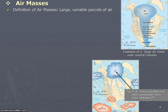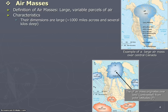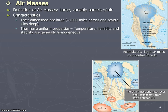What is an air mass? Air masses are large, variable parcels of air. They have to be distinguished from the surrounding air, and they are quite large — approximately a thousand miles across — and they can be several kilometers deep. Their properties are uniform, so their temperature, humidity, and stability should be generally homogeneous.